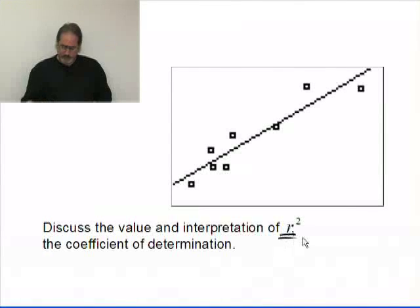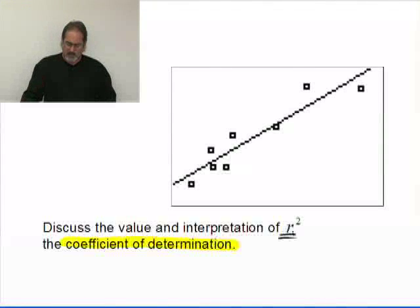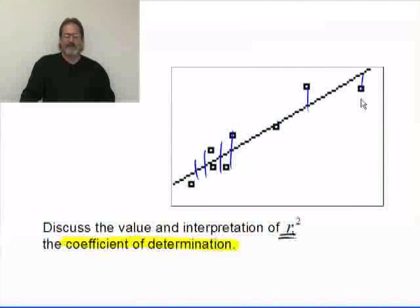Now, the value and interpretation of R squared. R squared is referred to as the coefficient of determination, and what that does is give us the percent of the variability that we're seeing, because there is variability here.